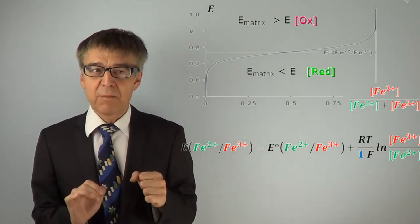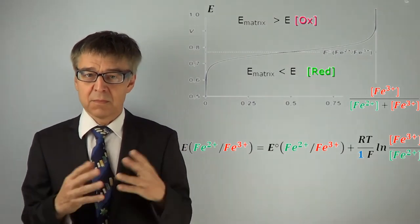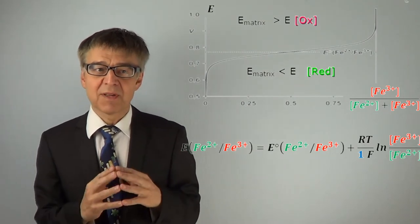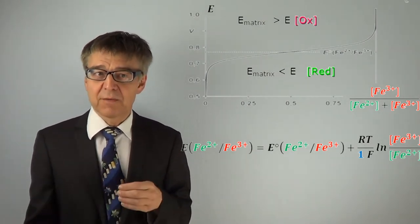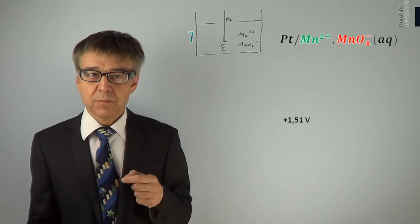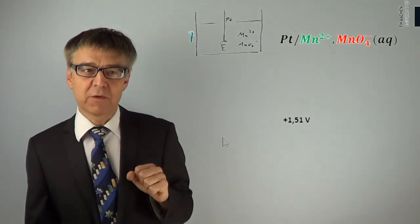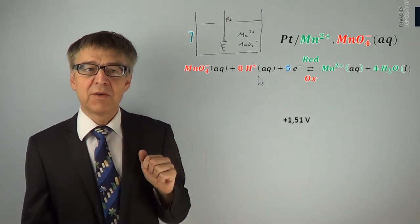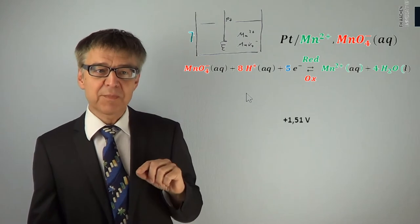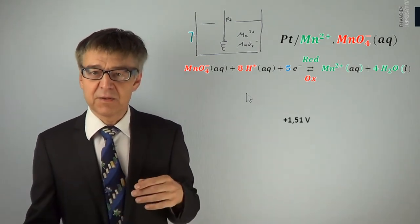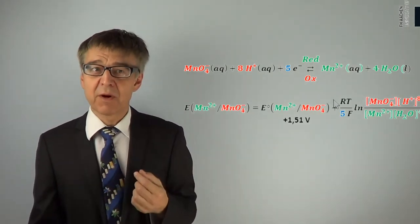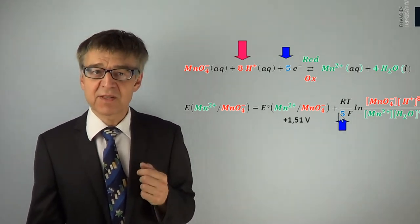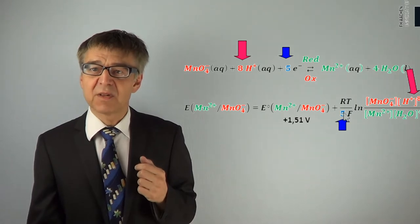This statement is generally true for each redox couple. The redox potential of a matrix, sometimes called ORP, is an equally important parameter as the pH of the matrix. Note that any information from the transfer reaction can be found in the Nernst equation. When calculating the redox potential of a permanganate electrode, the stoichiometric number of the electrons and the stoichiometric numbers of all reactants and products have to be taken into account.